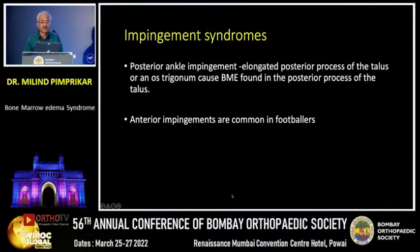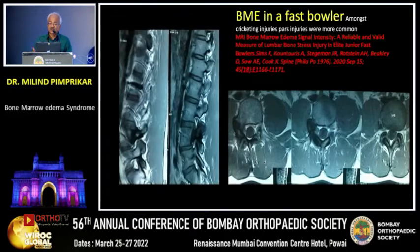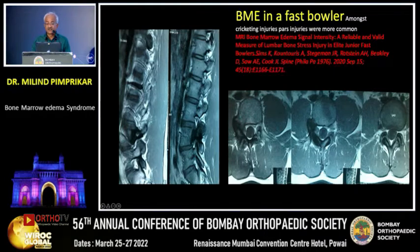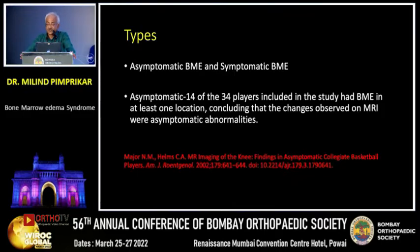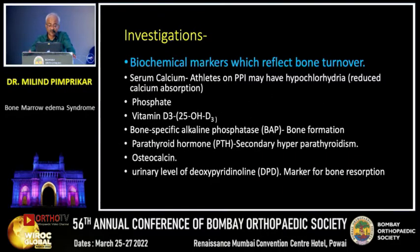Anything white on MRI should be analyzed to see whether bone marrow edema syndrome exists. Impingement syndromes also give rise to bone marrow edema in the hindfoot and calcaneum. A typical example is a stress fracture in the pars interarticularis of a fast bowler in cricket, shown on T1 imaging. These can also be symptomatic or asymptomatic. A paper by Major NM studied 34 basketball college players and found that 14 of them had some kind of bone marrow edema lesion somewhere and were absolutely asymptomatic, so it is important to determine whether they are symptomatic or not.